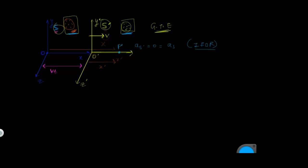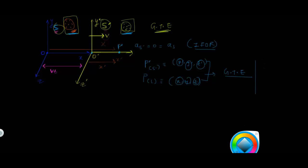Galilean transformation equations are formulas relating physical quantities in system S' and S. Let's begin with distance. We assume a point P' in system S' with coordinates x', y', z', and a point P in system S with coordinates x, y, z. Relating these two sets of coordinates is what the Galilean transformation equations consist of. These equations are valid only when the velocity of S' with respect to S is very much less than the speed of light.